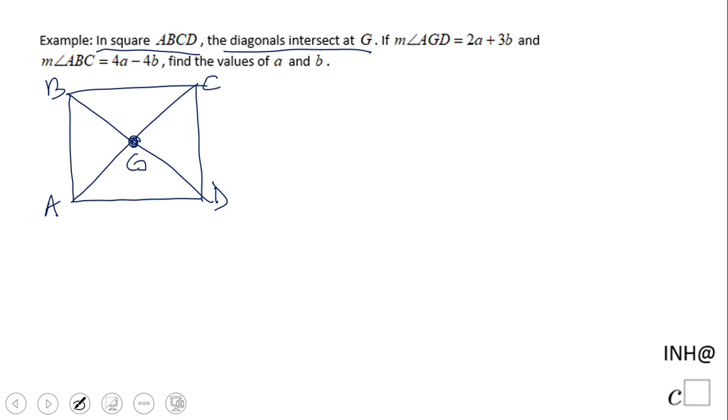The problem states: if the measure of angle AGD is 2a plus 3b, and the measure of angle ABC is 4a minus 4b, find the values of a and b.